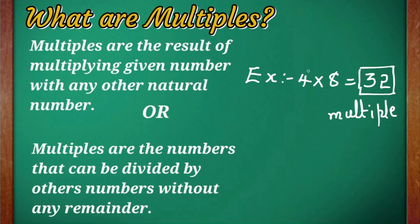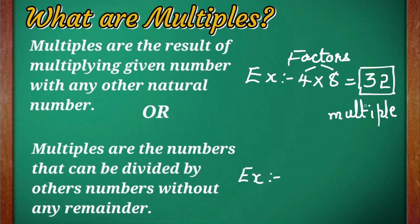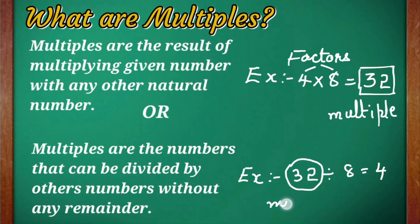And 4 and 8 are the factors. So this is one definition of multiples. There is another definition: multiples are the numbers that can be divided by other numbers without any remainder. If we take the same example, 32 can be divided by 8 completely, giving you 4 as the quotient, so no remainder is left.